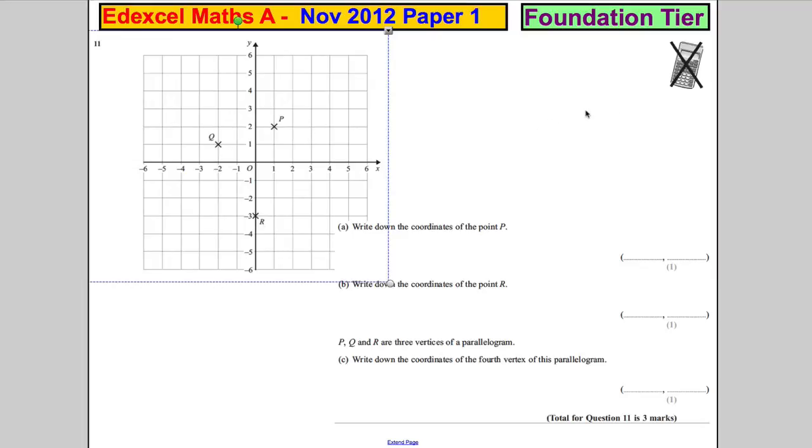Write down the coordinates of point P. So point P is here, and it's 1 across and 2 up. Remember, you're sometimes told to go along the corridor before you go up the stairs. 1 across, 2 up. We write that as 1, 2.